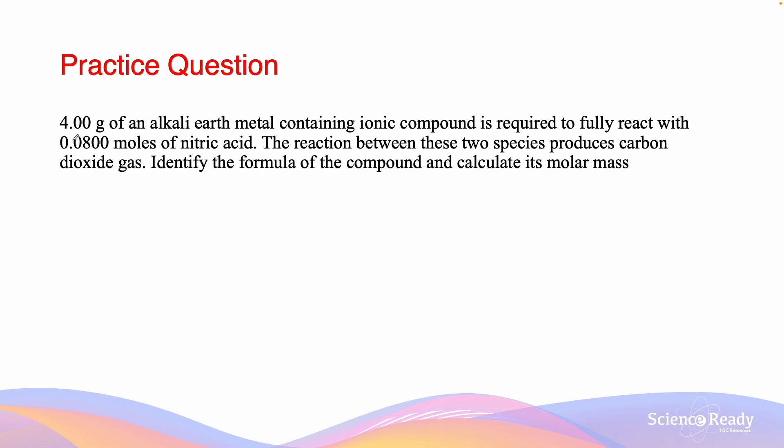We're given the mass of the alkali earth containing ionic compound and the number of moles of nitric acid required to fully react. The fact that the substance, when reacted with nitric acid, produces carbon dioxide hints at the ionic compound being a carbonate because acids and carbonates react to form carbon dioxide as a by-product. Assuming our substance is a carbonate, its general formula would be MCO3, where M is the suspected metal.